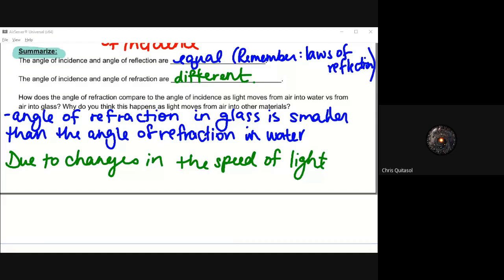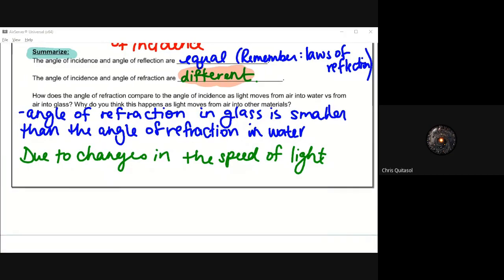Because in refraction, the angle of incidence and the angle of refraction are different. I cannot stress this enough. It will always be different. If there is any refraction, those two angles will be different. So how does the angle of refraction compare to the angle of incidence as light moves from air into water versus air into glass? Why do you think this happens as light moves from air into other materials? That's where you're going to play around with it. The notes are there already. But the main idea here is that the speed of light changes. Now, the speed of light constant does not change. But as the light moves from air to glass or air to water, the speed changes in that medium. And that's where we start to see that refraction and why those properties start to take place.